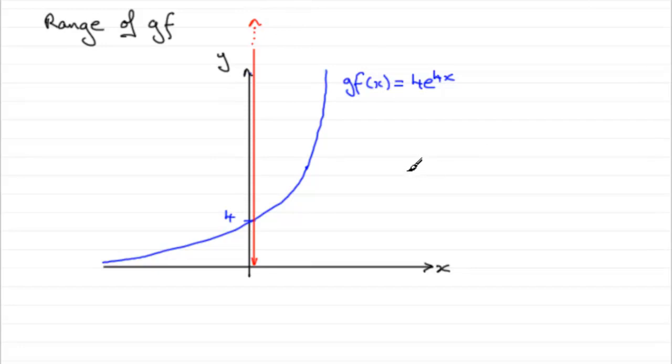So when it comes to that range, okay, the range of GF is such that we can say that GF is greater than zero. All values greater than zero, okay. Don't say less than infinity or anything like that. It is just simply greater than zero.